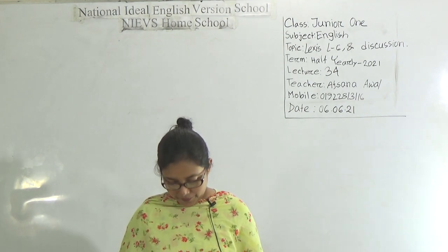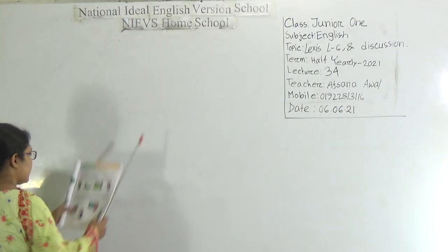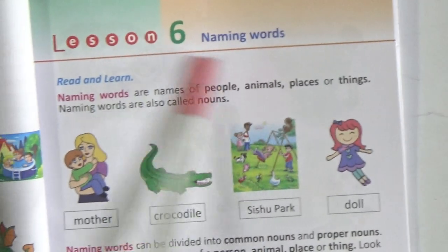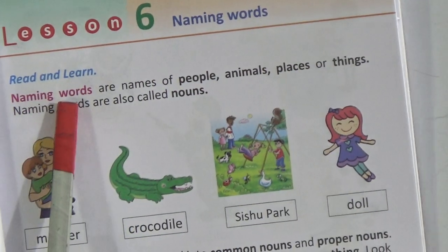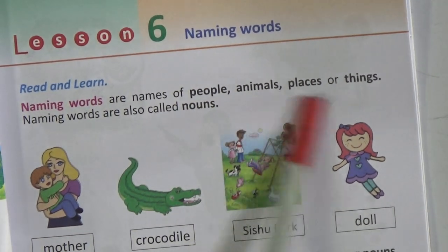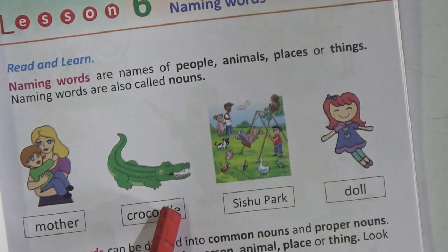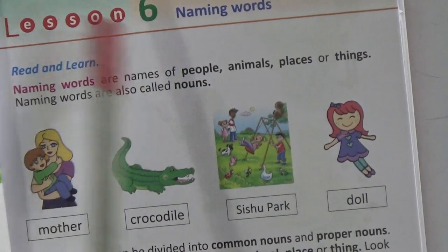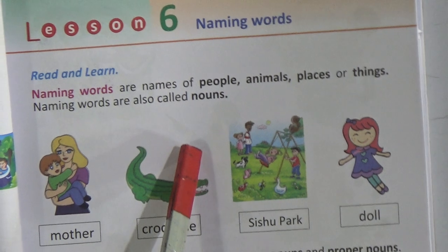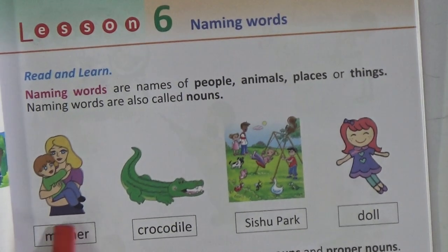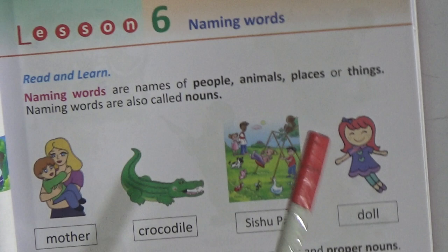Let's start our class. Look at the board, students. This is Lesson 6 and this is naming words. The chapter's title is 'Naming Words.' At first we have to know what naming words are. Naming words are names of people, animals, places, or things. Naming words are also called nouns — that means the name of anything is called a naming word, and this naming word is called a noun.